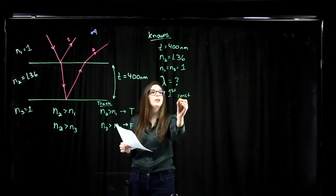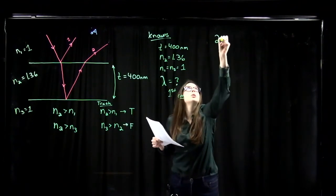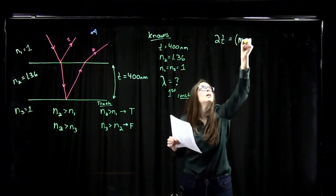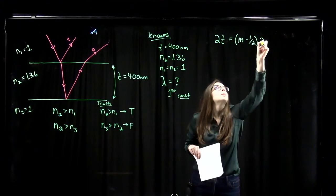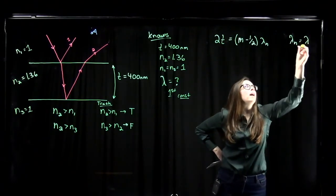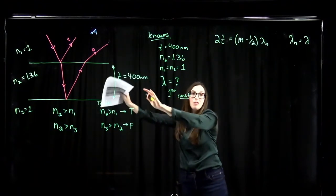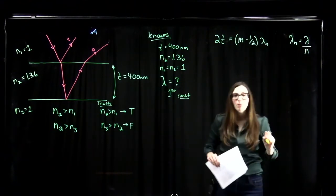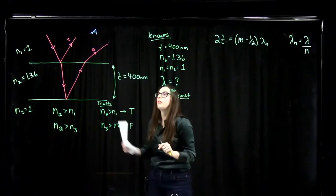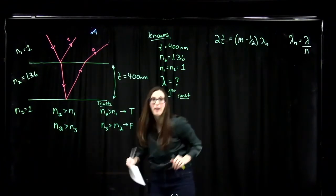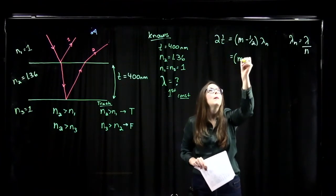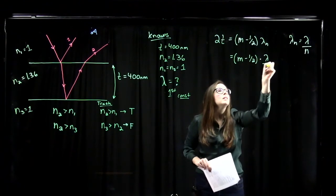That row tells us for constructive interference we use the equation: 2T equals (M minus one-half) times lambda-sub-N. Remember that lambda-sub-N is the wavelength of light in the film, equal to the incident wavelength divided by the index of refraction. So we replace lambda-sub-N with lambda over N, giving us: 2T equals (M minus one-half) times lambda over N.